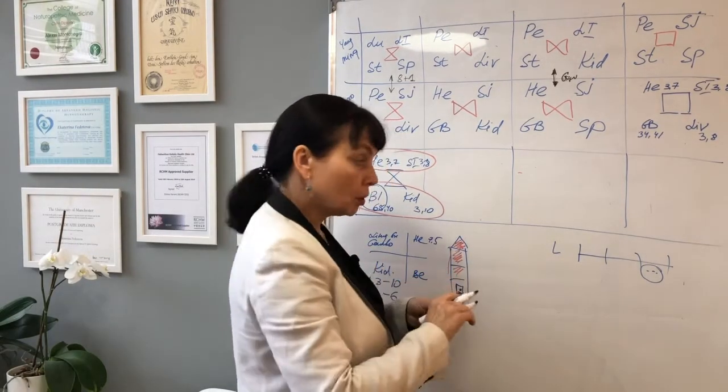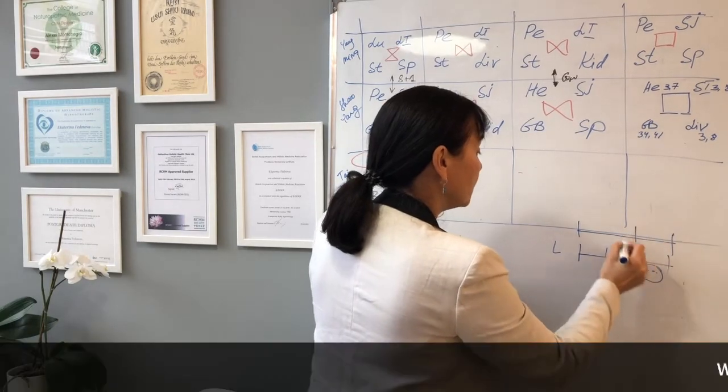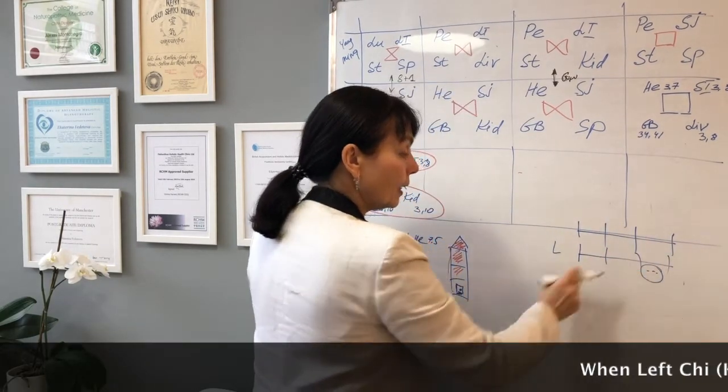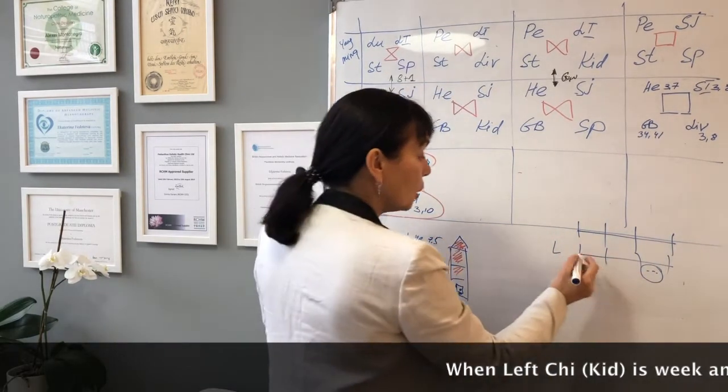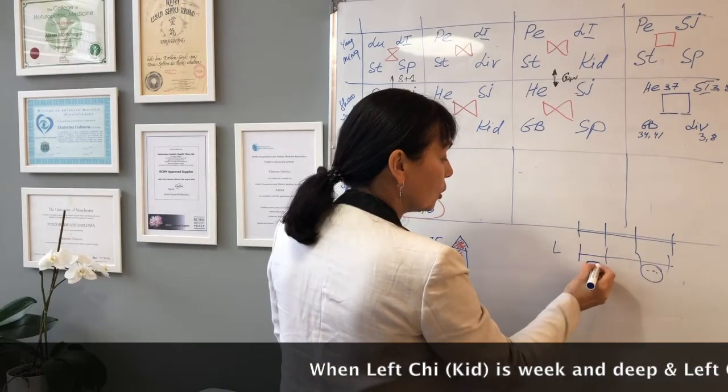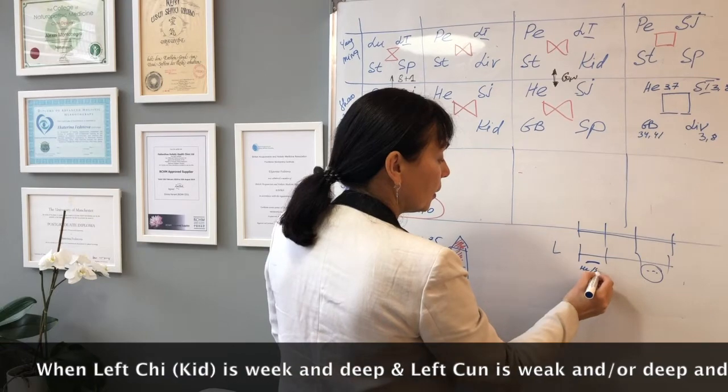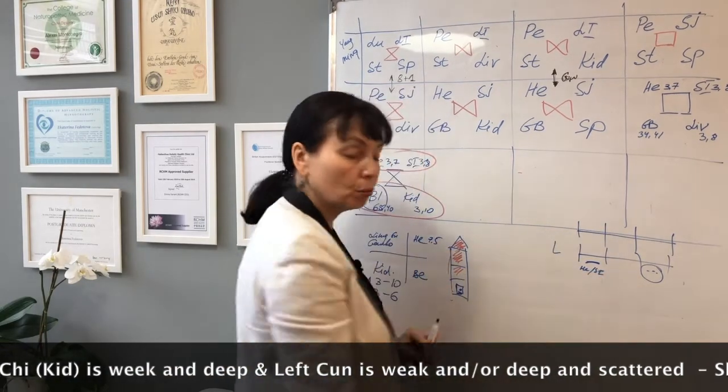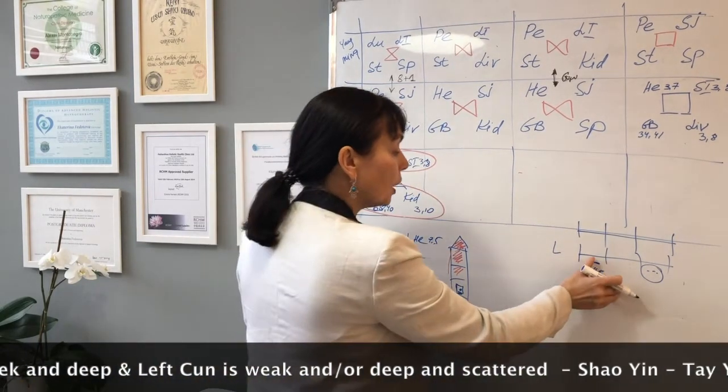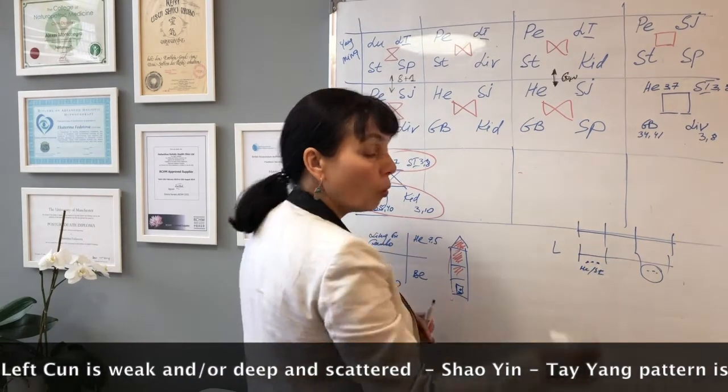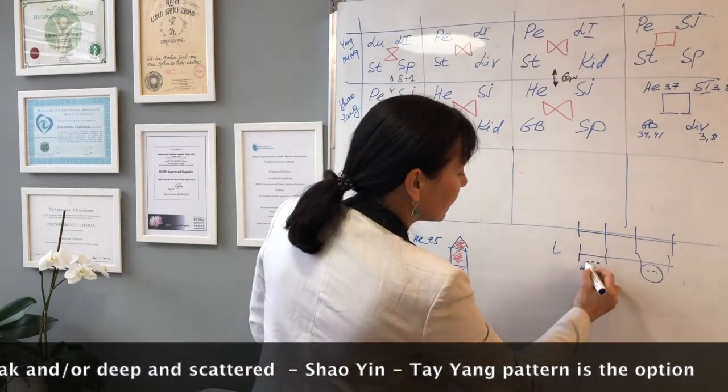If you do the pulses, you want to check the pulses. Apart from weak kidney, you will see very low left soon, very low and weak, or sometimes it's scattered.